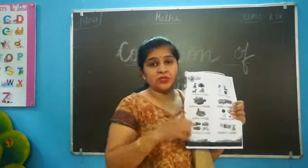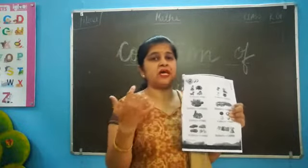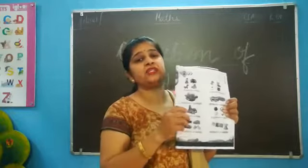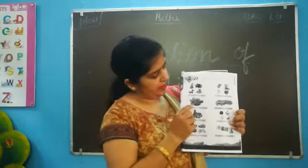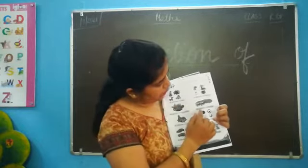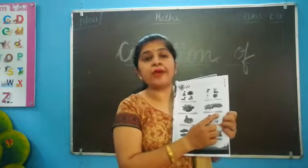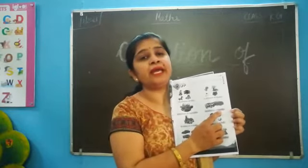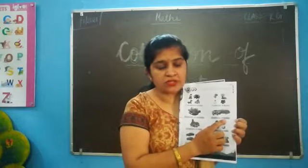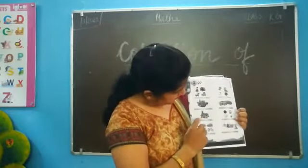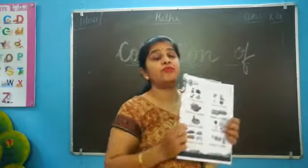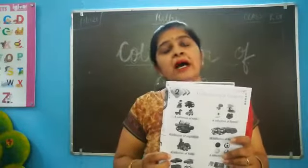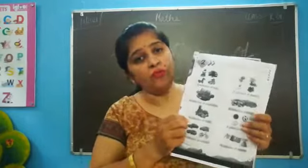It's vegetables. Khub saari vegetables ikhata ho gai, toh ye collection hai — usse bolenge collection of vegetables. Now, collection of books. Agar aap ki bahut saari books hai, new books hai, toh usse kya bolenge? Collection of books. Now, collection of fruits — all types of fruits, all type of group of food, are called collection of fruits.